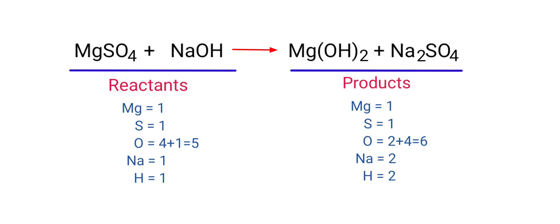The number of atoms are not balanced on both sides. To balance the chemical equation, we need to make use of coefficients. A coefficient is a number that we place in front of a chemical formula.